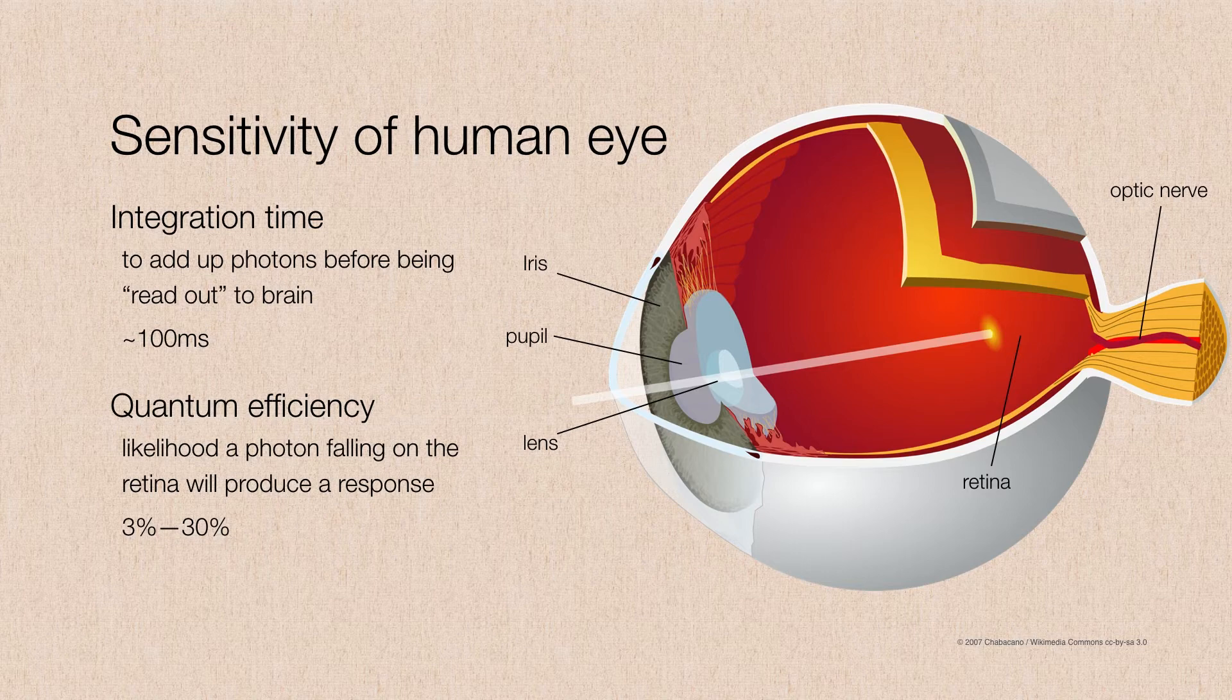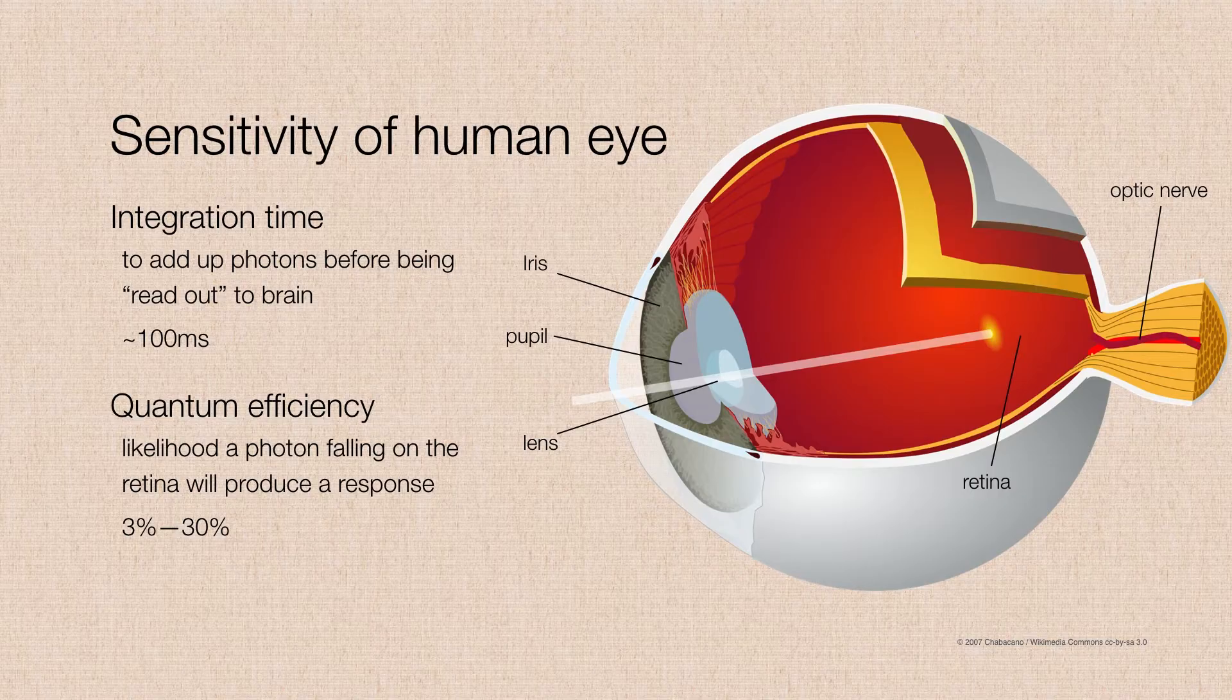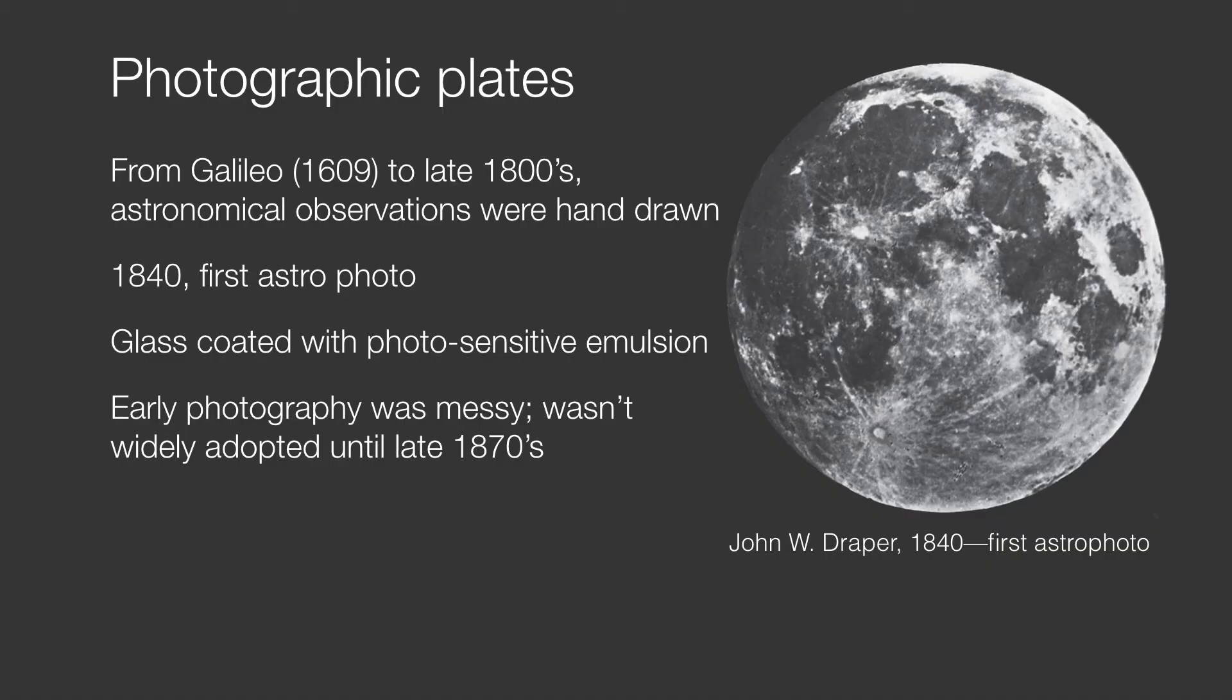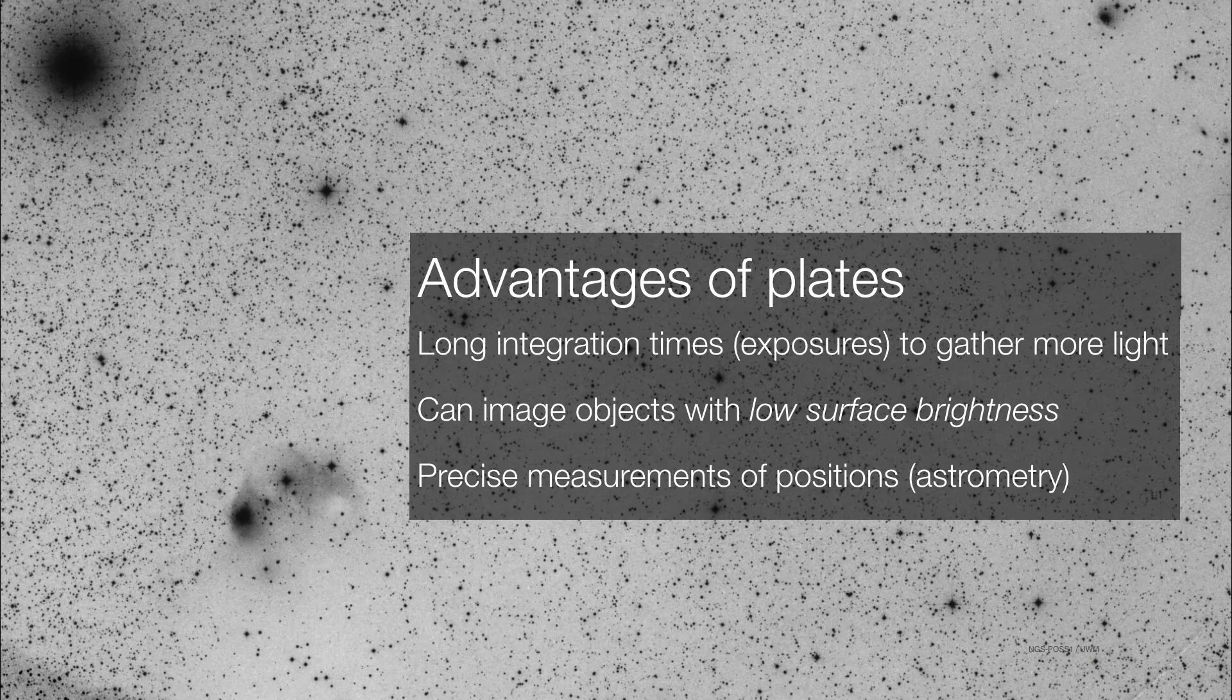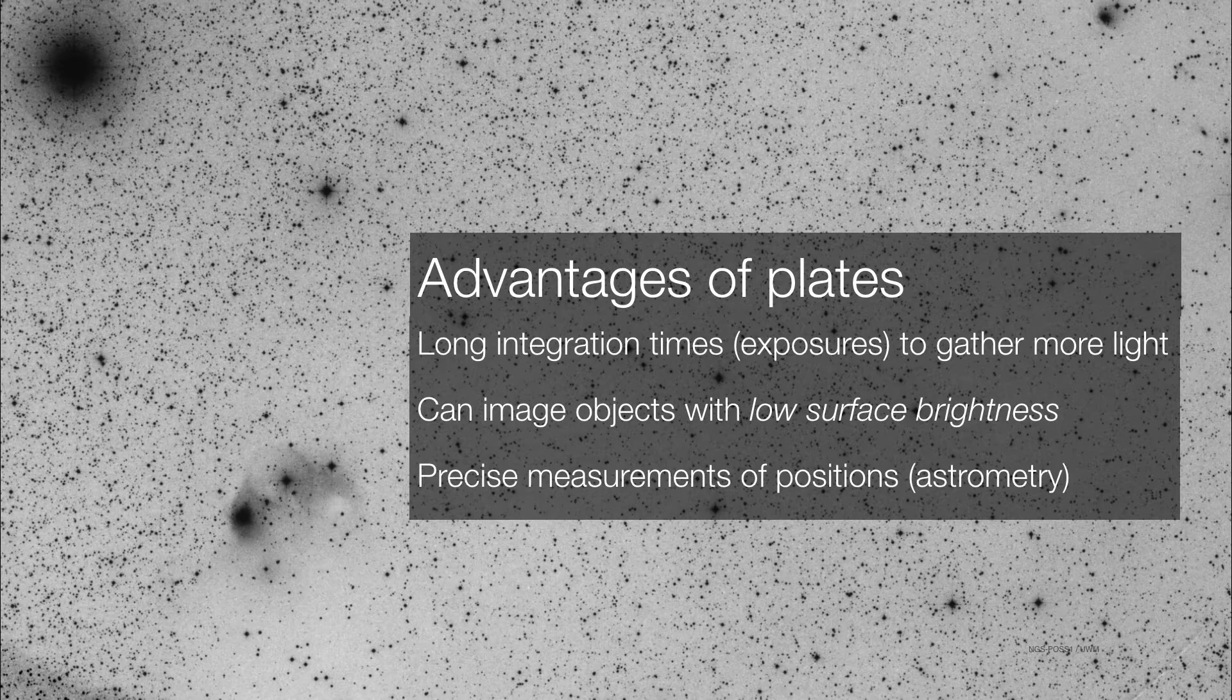So clearly using the eyeball and a good drawing was the only way to record anything in the sky until the 1800s when John W. Draper captured the very first astrophoto. And he was using glass plates, which were commonly used in photography at the time. And there were several advantages to glass plates over the human eye. Number one, you could have very long integration times. And this meant that you could gather light on very, very faint objects. Not just faint stars, but also faint fuzzy objects like these nebulae that you see here are regions of what are called low surface brightness.